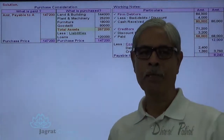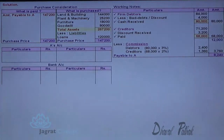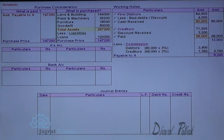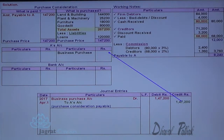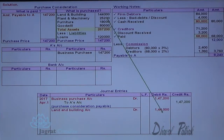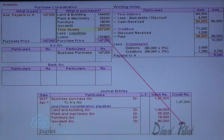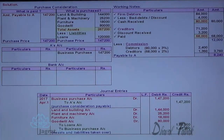After preparing working notes, I write down the journal entries and prepare two accounts: A's account and cash and bank account. Entry 1: Business purchase account debit to A's account credit — being purchase consideration payable. Entry 2: Land and building account debit, plant and machinery account debit, furniture account debit, goodwill account debit; to loan account credit, to business purchase account credit — recording the assets and liabilities acquired.